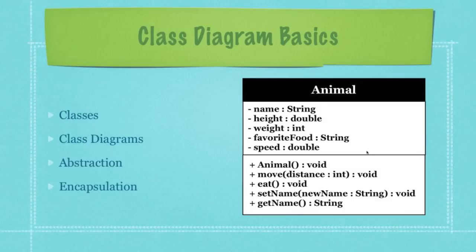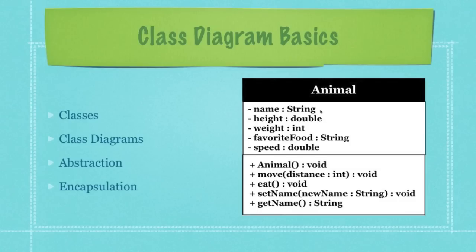Here we can see an example of encapsulation, which sounds complicated but really isn't. Whenever we encapsulate our fields, we protect them and don't allow outside sources to give our animal object a name that is just a bunch of integers, which wouldn't make sense because most animal names are strings you can pronounce. So in set name, for example, we make sure a string is coming in and verify it before assigning the name — and that is encapsulation.